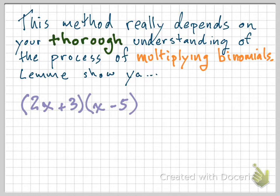If we took 2x plus 3 times x minus 5 and you wanted to multiply those two binomials together, probably the first thing you would do, at least the first thing I do, is multiply the first terms together. So that's 2x squared.